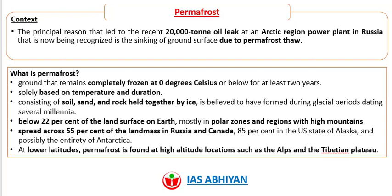The next article is on permafrost. The principal reason behind the recent 20,000-ton oil leak at an Arctic region power plant in Russia is now being recognized as the sinking of the ground surface due to permafrost thawing. What is permafrost? Permafrost is ground that remains completely frozen at zero degrees Celsius or below for at least two years. They are solely based on temperature and duration. The permafrost consists of soil, sand, and rock held together by ice.